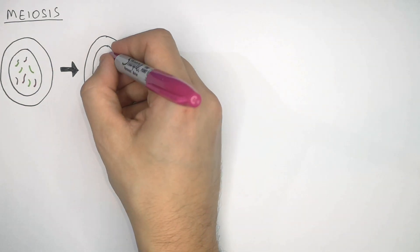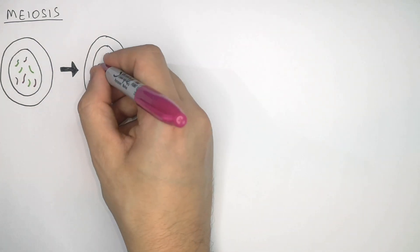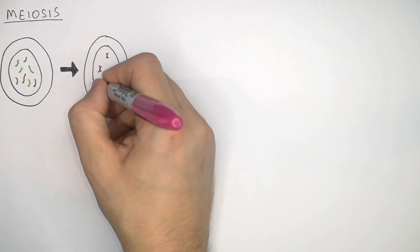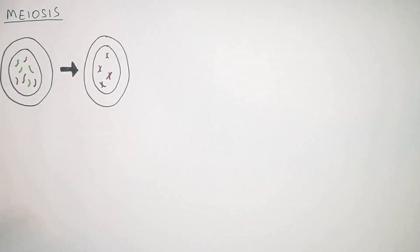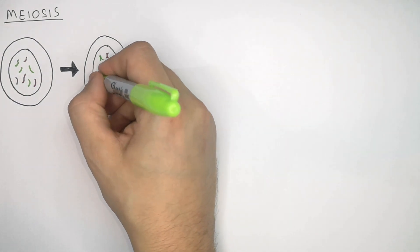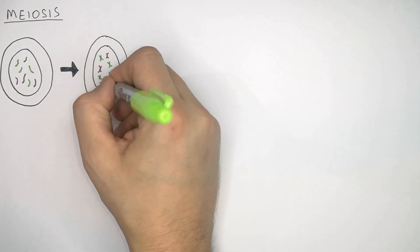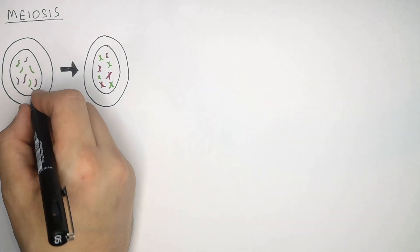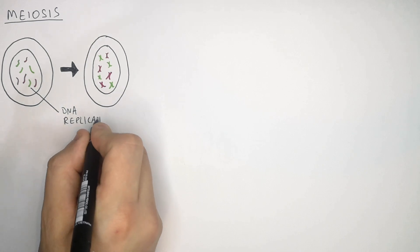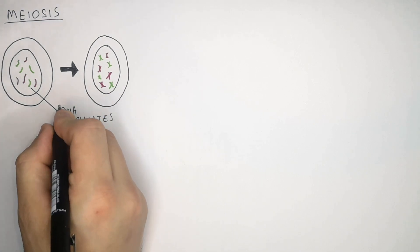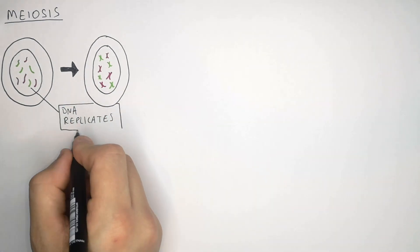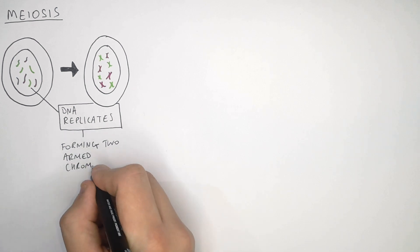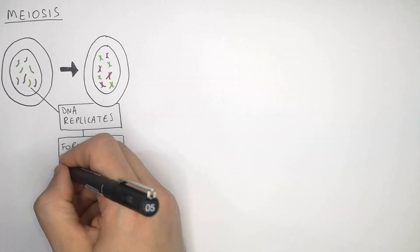The first stage of meiosis is that the chromosomes' DNA replicates, so one-armed chromosomes become two-armed chromosomes.